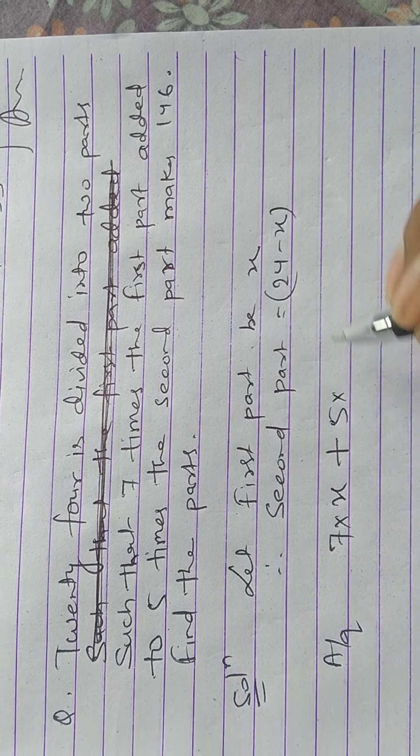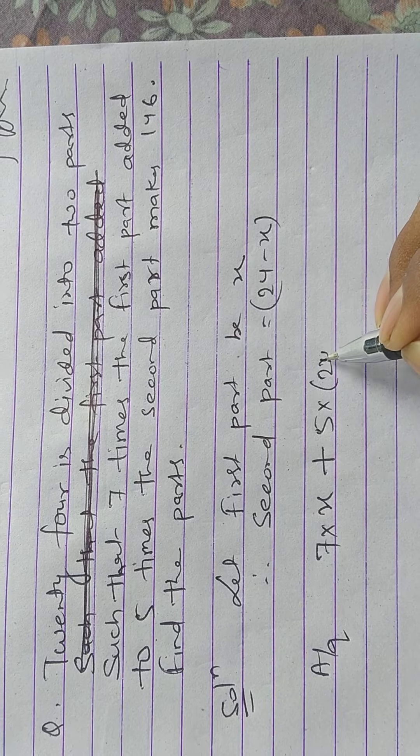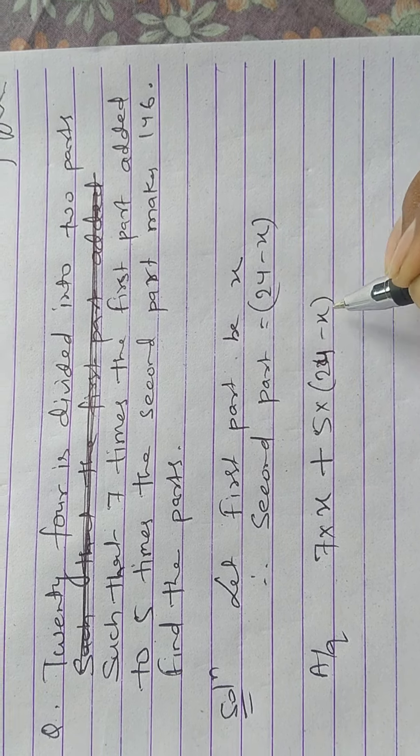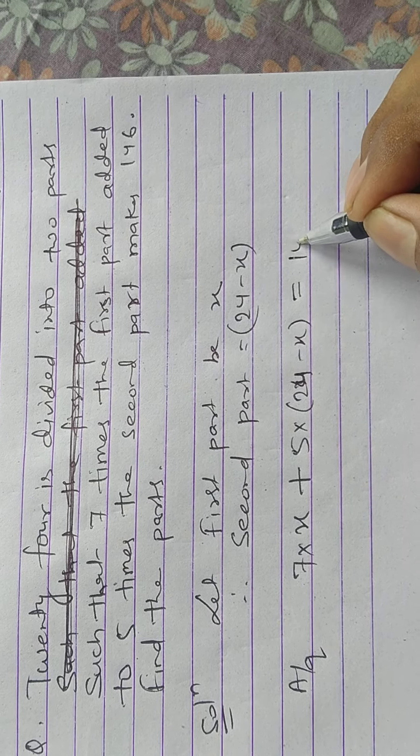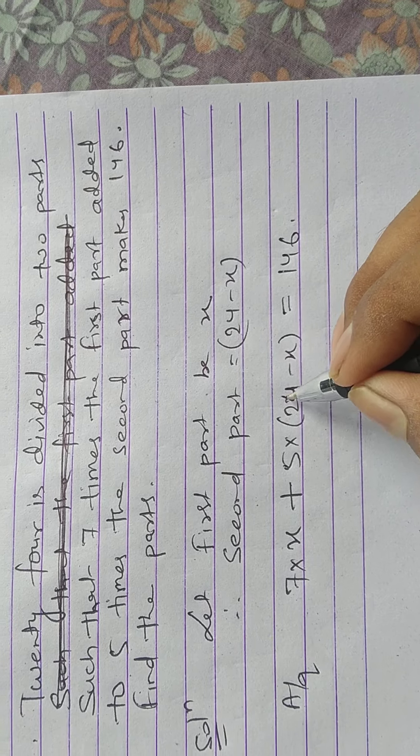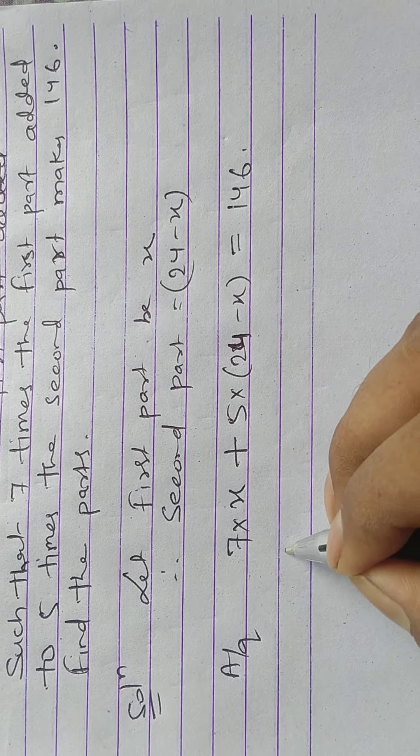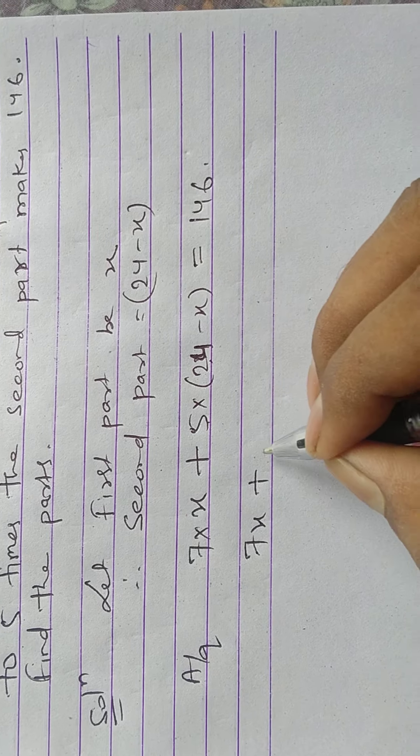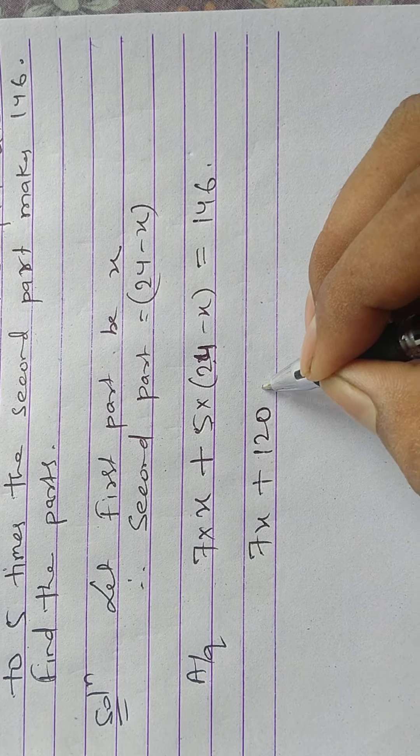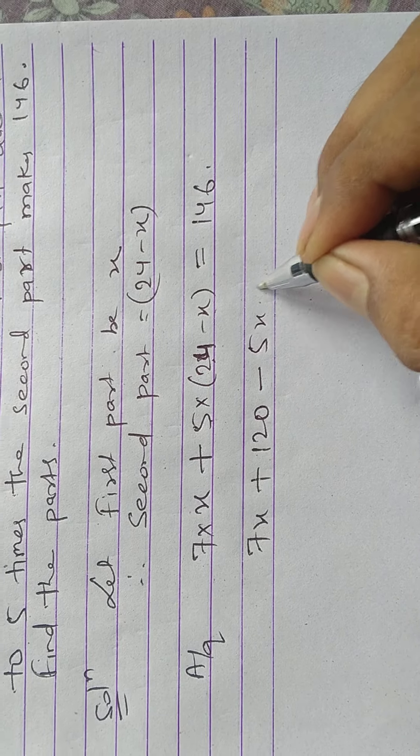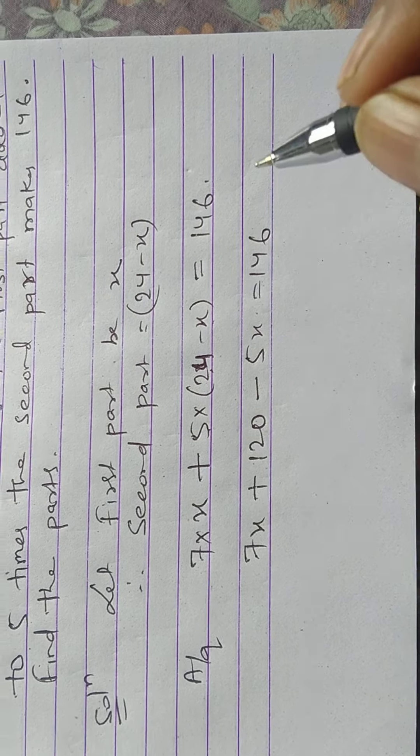makes 146. Now solving this equation to find the two parts: 7x plus 5 into 24 equals 120 minus 5x equals 146.